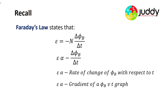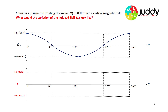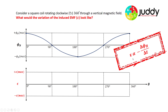That's the application we'll be looking at in today's video. Consider a square coil rotating 360 degrees through a vertical magnetic field. We want to look at what the variation of the induced EMF would look like. We have in front of us the graph of the change in magnetic flux with angle, and from that we're going to derive the change in EMF versus angle. Remember, the EMF is proportional to the negative rate of change in the magnetic flux.